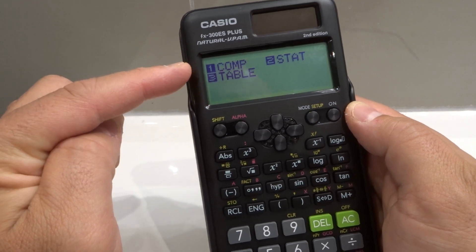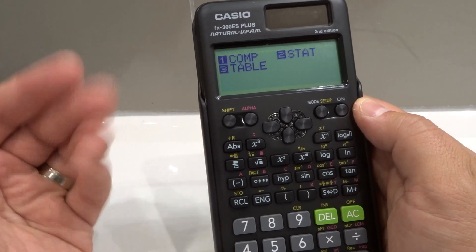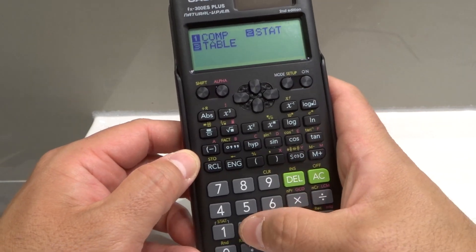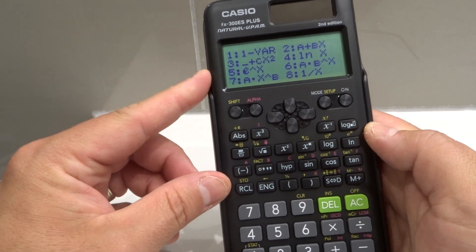So I pressed mode and we have three options. Number one is comp. Number two is stat. Number three is table. You're going to go ahead and you're going to choose the option that you want. So let's say I wanted a statistical calculation. I'll push number two and it gives me all these options.